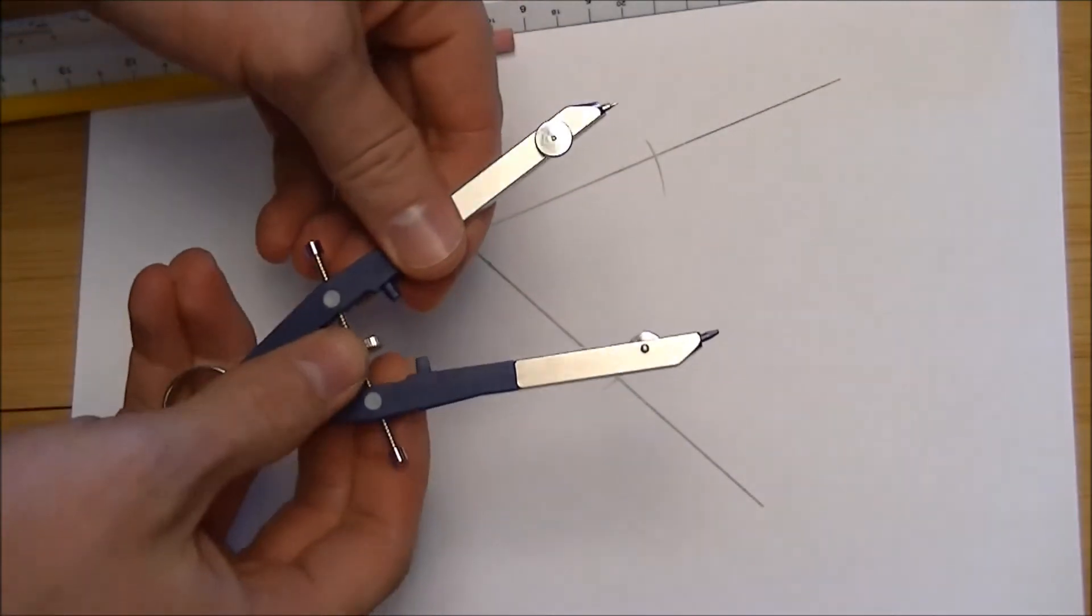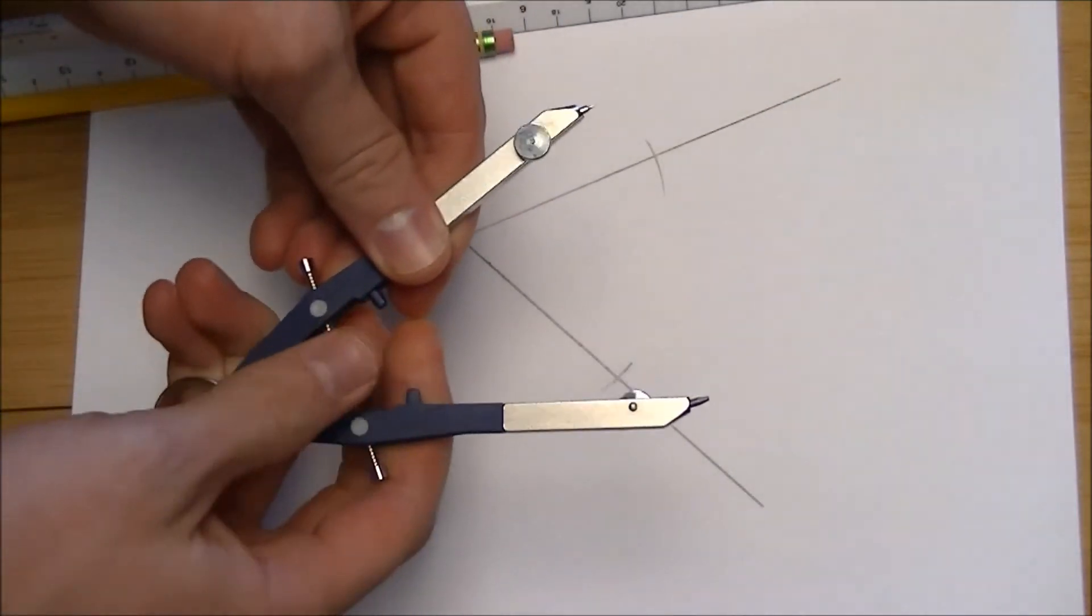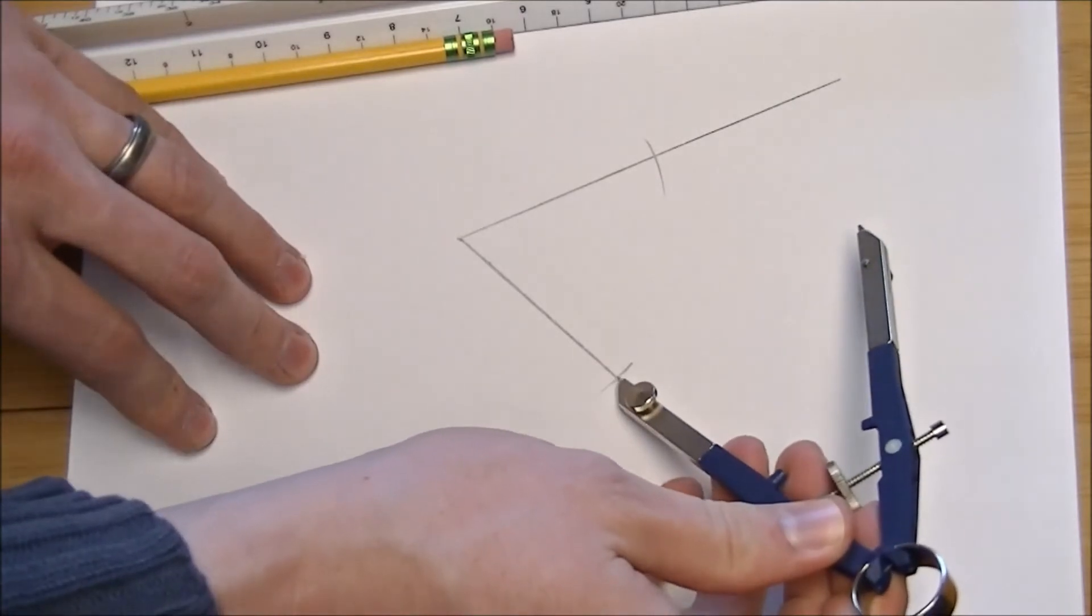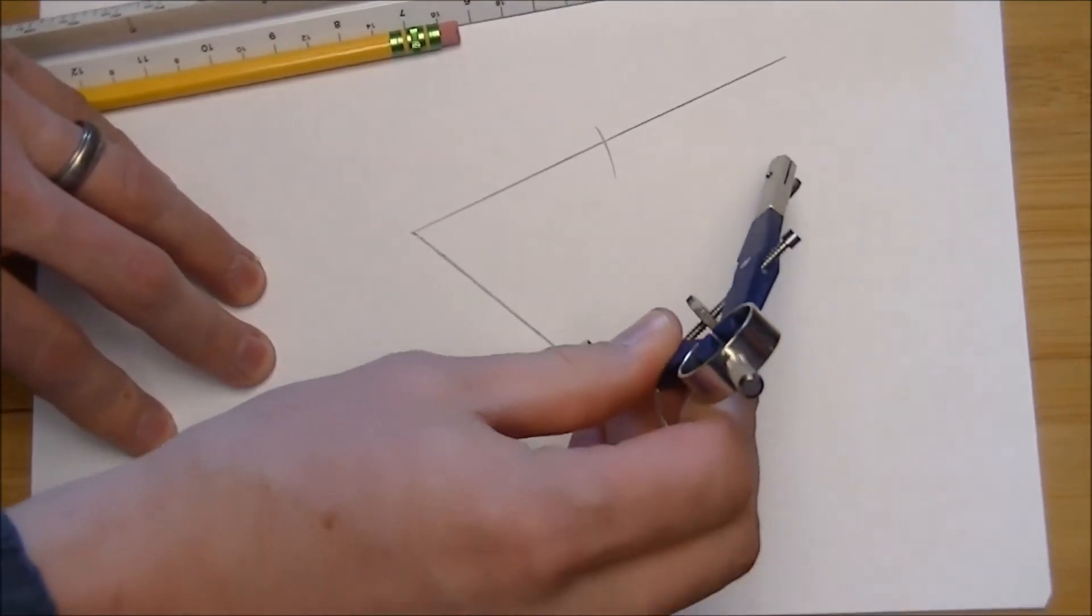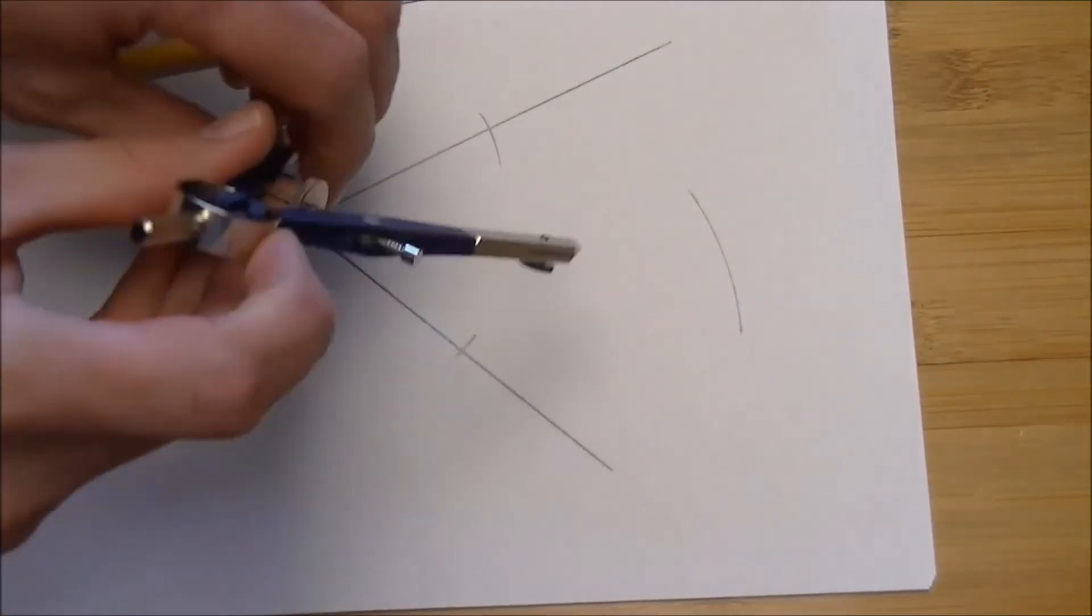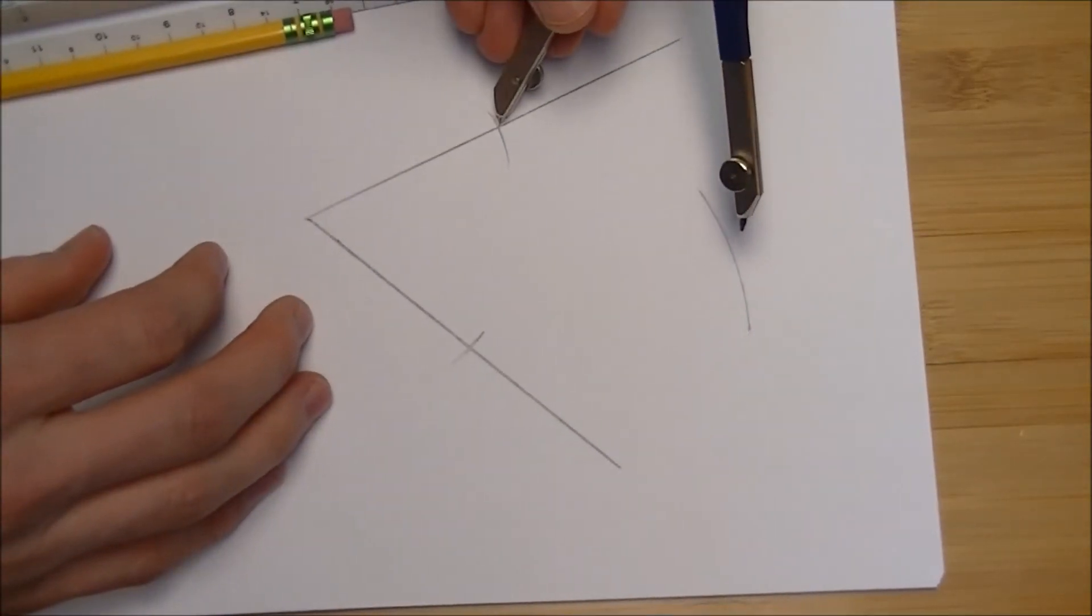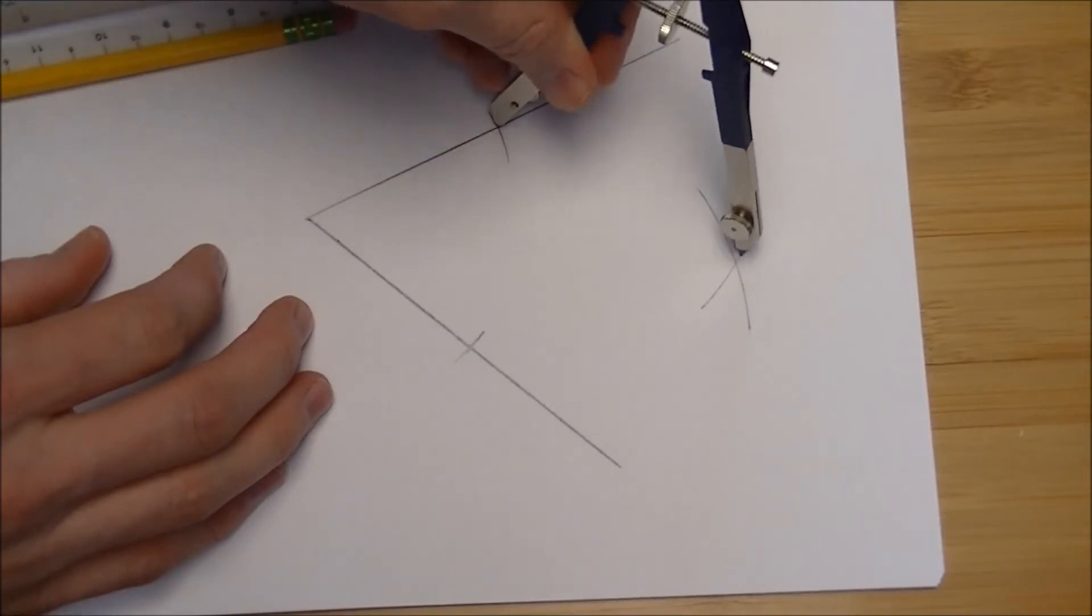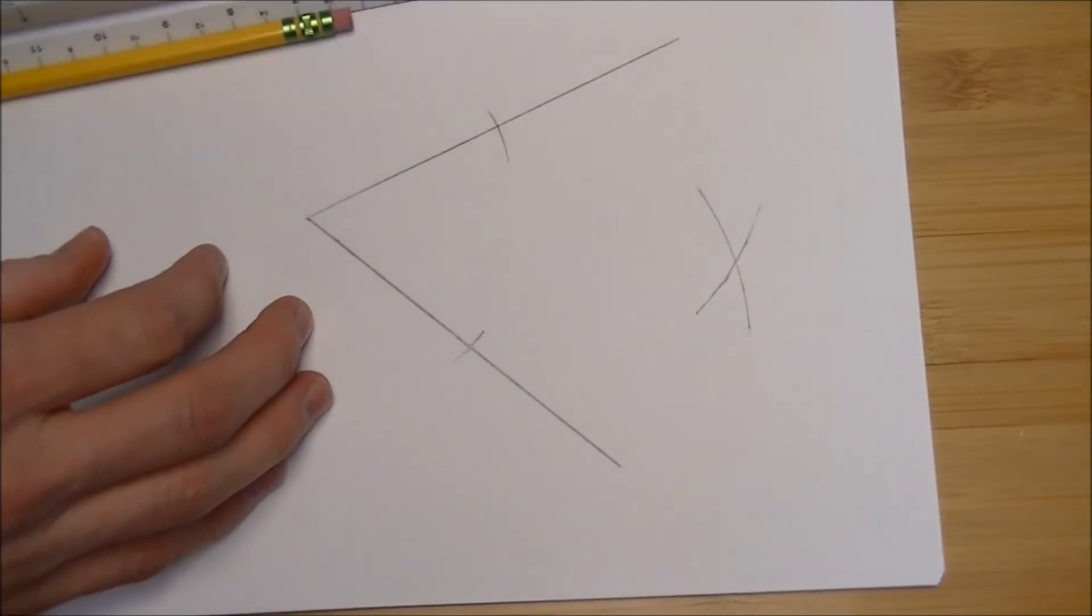Now, you'll want to widen your compass just a little. It really doesn't need to be this wide. But you want to be able to make marks on the paper kind of out here. There. And then setting your point here. There.